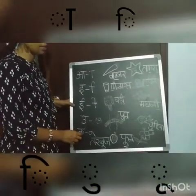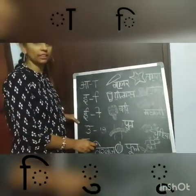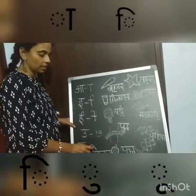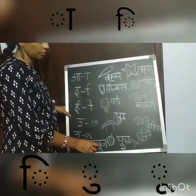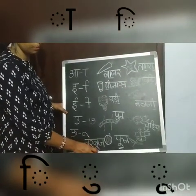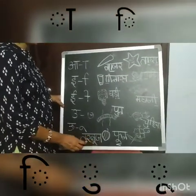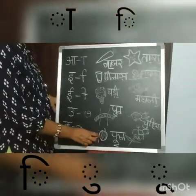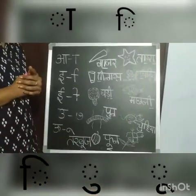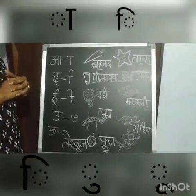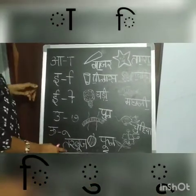And the next — Badi Matra. See? Tar. Baki Badi Matra — Bu. Tarbu — watermelon. Do you like to eat watermelon, children? Yes? Tarbu.